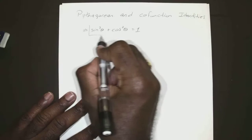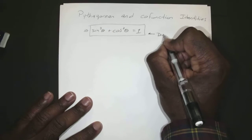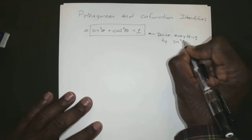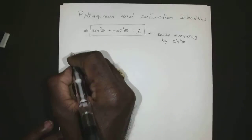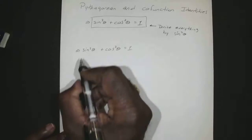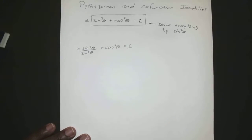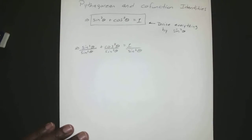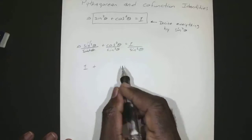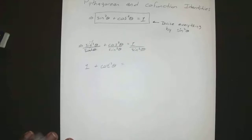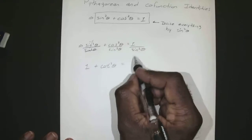Sine squared plus cosine squared equals one. So what if we divide everything by sine squared theta? That would give us sine squared theta plus cosine squared theta equals one — divide each term by sine squared theta. Anything divided by itself is one, so that just disappears. So you have one plus cosine over sine, which is cotangent, so you have cotangent squared theta equals one over sine, which is cosecant squared theta.